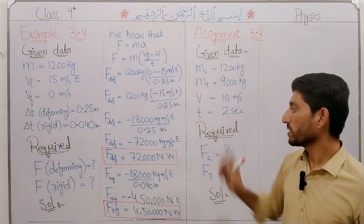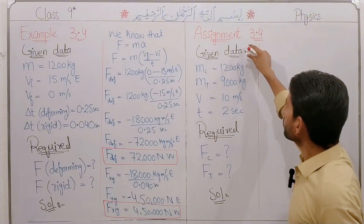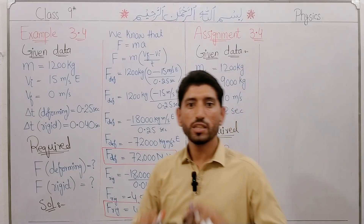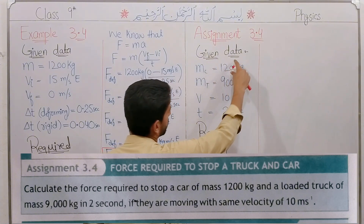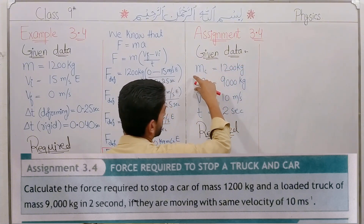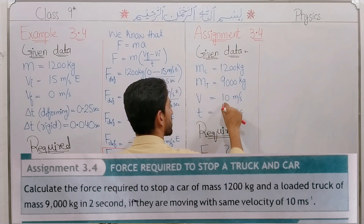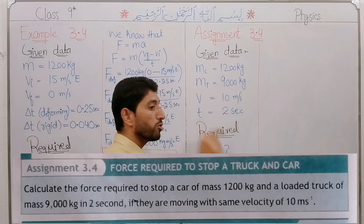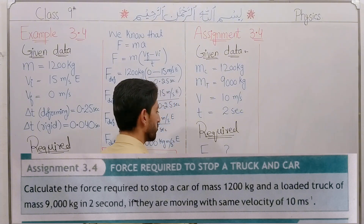The example is 3.4. Now Assignment 3.4 is on the screen. The motor car is 1200 kg. The truck is 9000 kg. Both have the same velocity of 10 meters per second. The motor car stops in 2 seconds and also in 4 seconds.